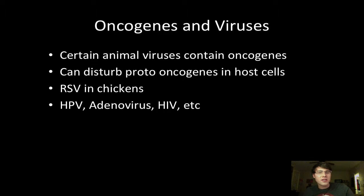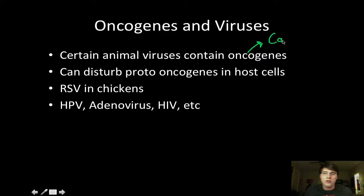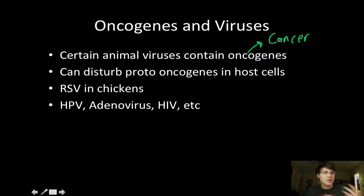One of the things that animal viruses can have is oncogenes. Certain animal viruses can contain oncogenes — genes that code for cancer, in a sense. If you're an oncologist, you study cancer. Certain viruses can contain genes that can make their host cells become cancerous, or they can also disturb the proto-oncogenes inside of host cells.